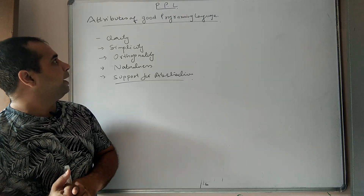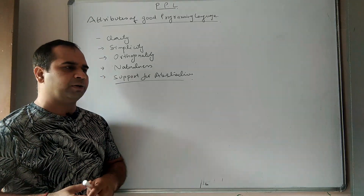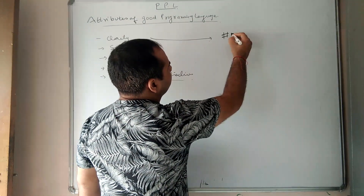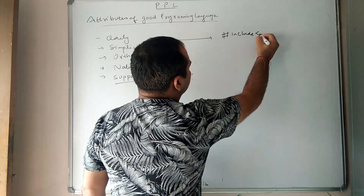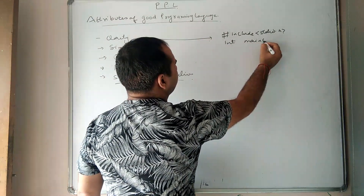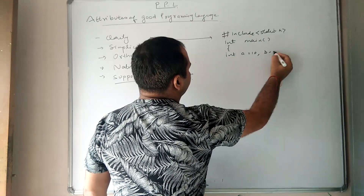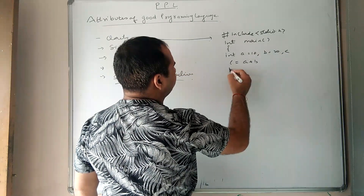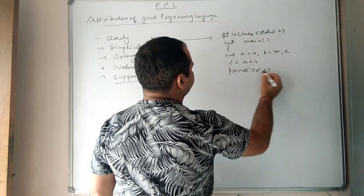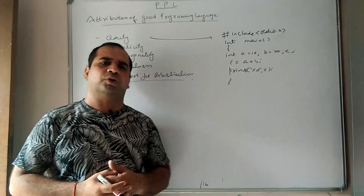The first attribute of a good programming language is clarity. What is the exact meaning of clarity? To explain clarity, let us take an example. We have a short C program: include standard library, integer main, int a equal to 10, b equal to 20, c equal to a plus b, printf percentage d of c.